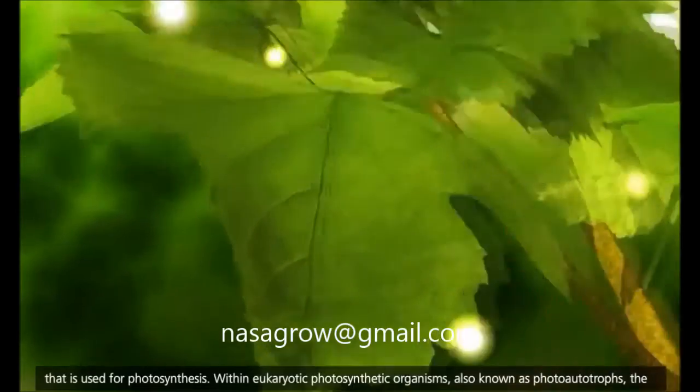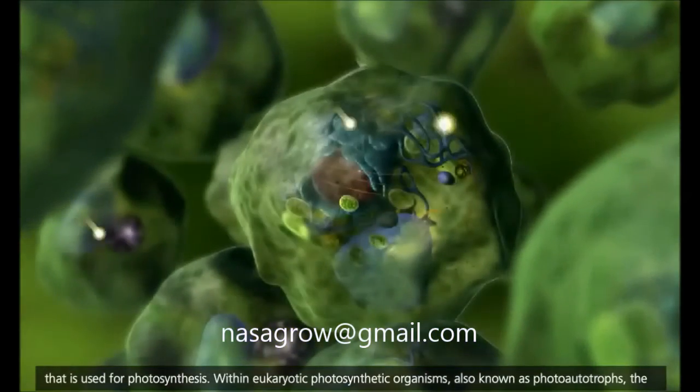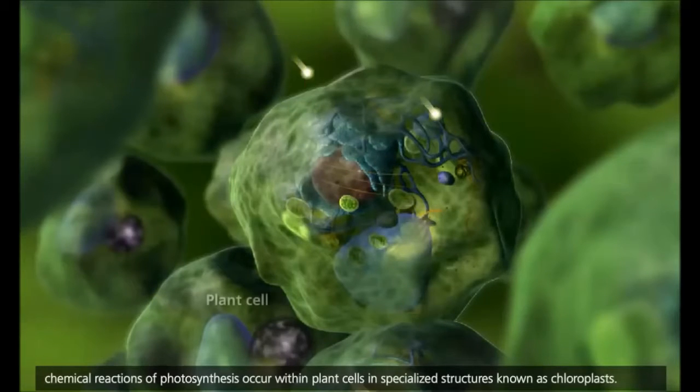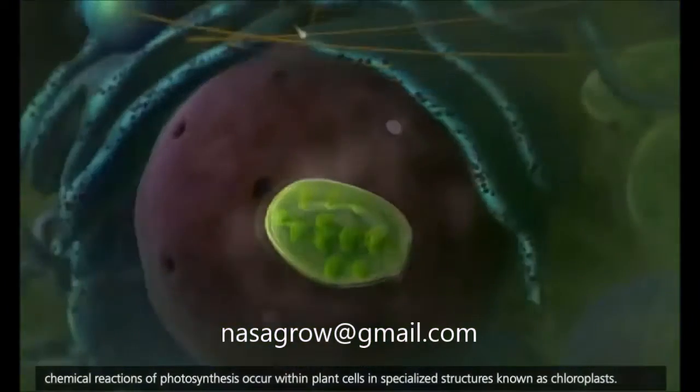Within eukaryotic photosynthetic organisms, also known as photoautotrophs, the chemical reactions of photosynthesis occur within plant cells in specialized structures known as chloroplasts.